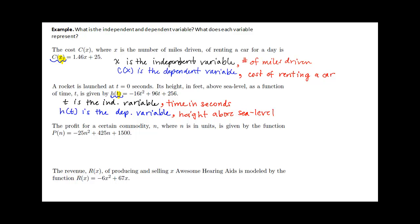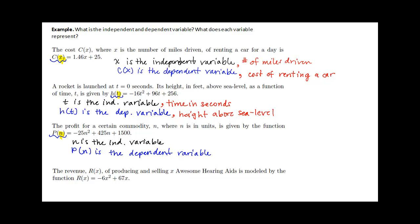The profit for a certain commodity n, where n is in units, is given by the function p of n equals negative 25n squared plus 425n plus 1500. We can see that n is the independent variable and p of n is the dependent variable. n is the number of units of the commodity, and p of n is the profit.